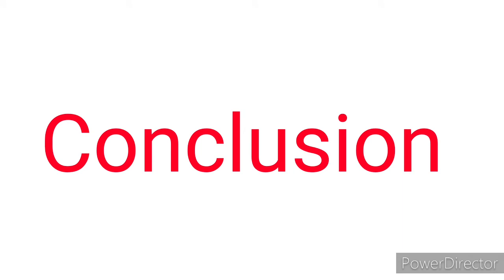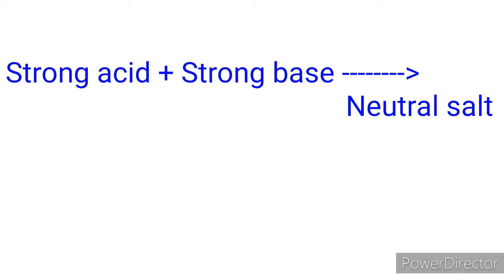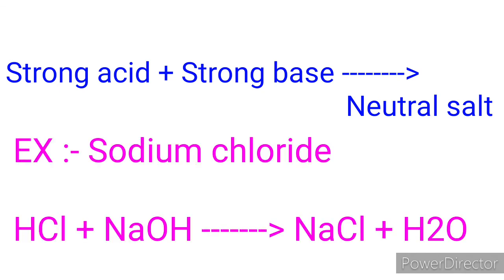After observing the table, we understand that the salt of a strong acid and a strong base is neutral and has a pH value of 7. For example, sodium chloride is formed by hydrochloric acid (a strong acid) and sodium hydroxide (a strong base), so the nature of sodium chloride is neutral and its pH value is 7.